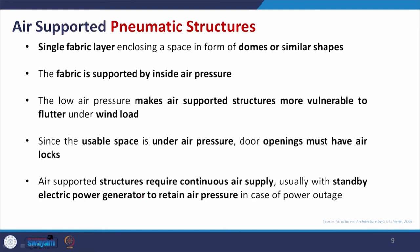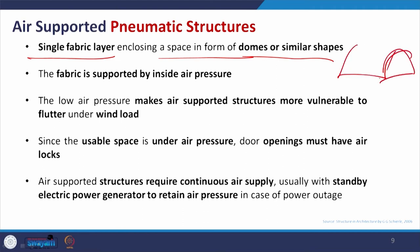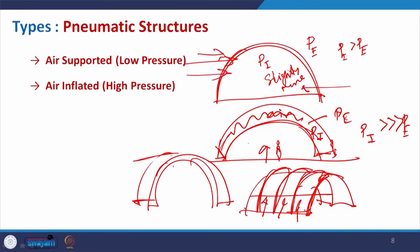For the air-supported type: it is a single fabric enclosing a space in the form of domes or similar shapes — a dome or a barrel vault with a closed end and an entrance. The fabric is supported by internal air pressure. The low air pressure makes air-supported structures more vulnerable to flutter or wind load, since the interior pressure is only slightly more than exterior. With heavy wind, it cannot hold its volume and will deform.